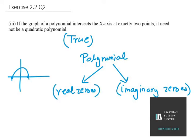The polynomial could have real zeros as well as imaginary zeros. These things you will learn in higher classes, so I won't go into detail now. But you must know that polynomials can have both real zeros and imaginary zeros.